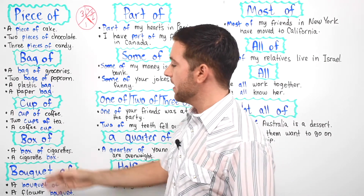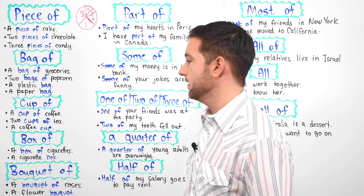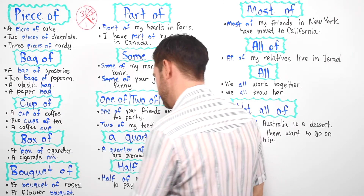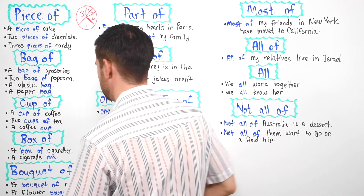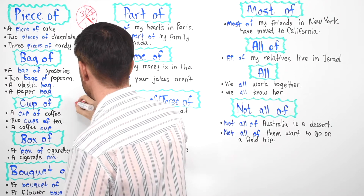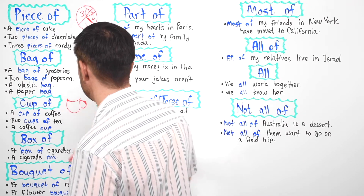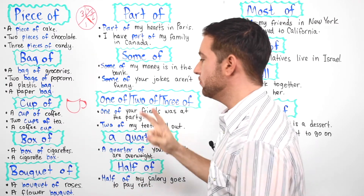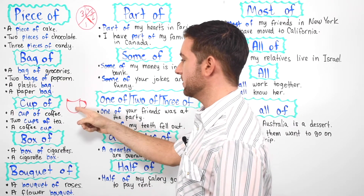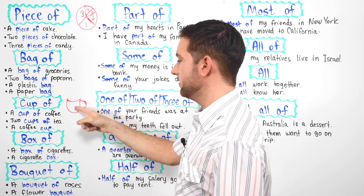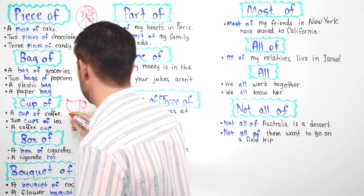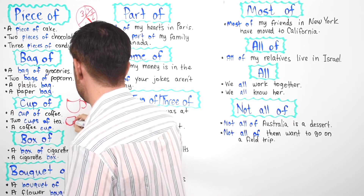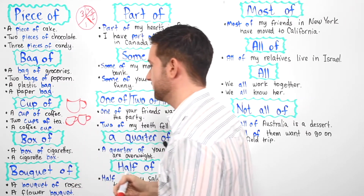Next we have "cup of." A cup of coffee. You know what a cup is — a cup is just something that you drink out of. For example, this is a cup. A cup of coffee, two cups of tea. So you have one cup of coffee here, and then you can have two cups of coffee or two cups of tea.